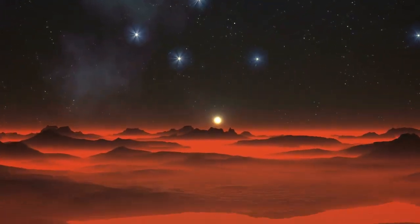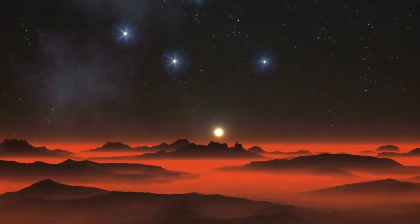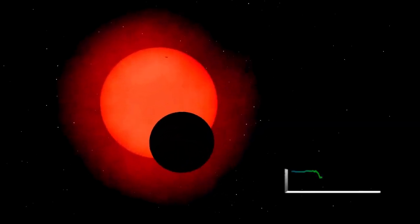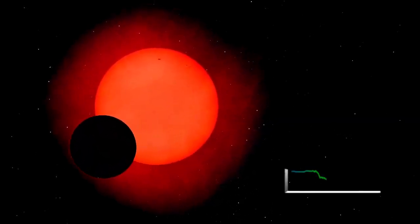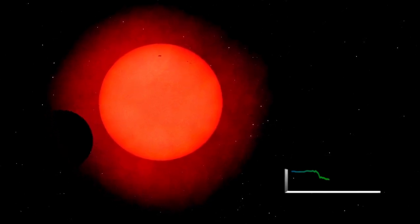With a year that lasts just 11.2 Earth days and a distance from its star that is 20 times closer than Earth is to the Sun, it is likely that one side of the planet is always bathed in daylight, while the other side remains in perpetual darkness.